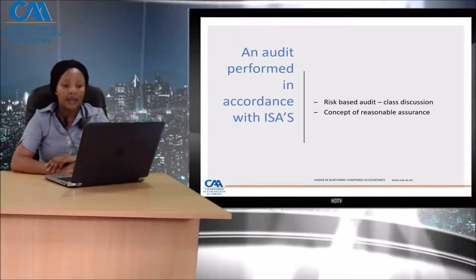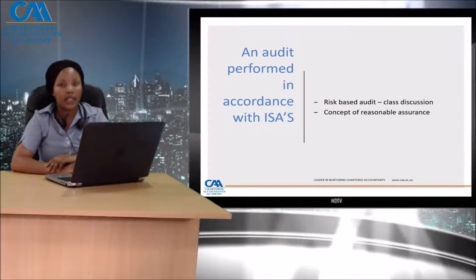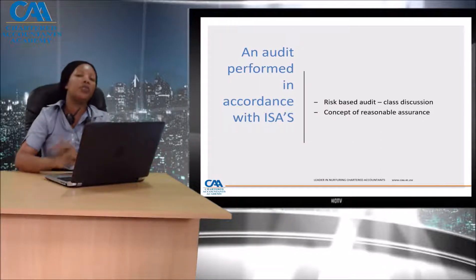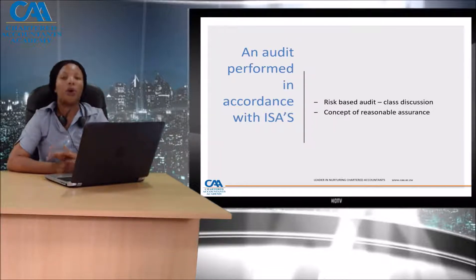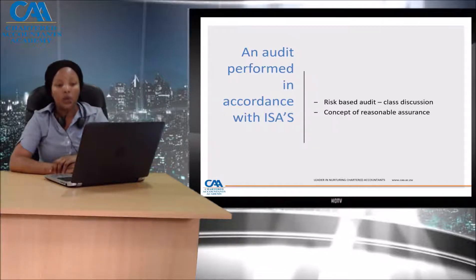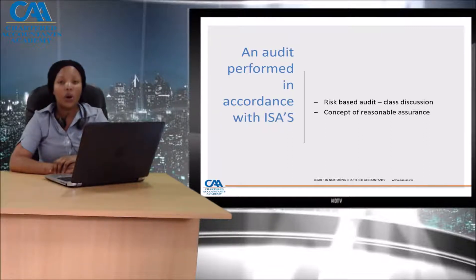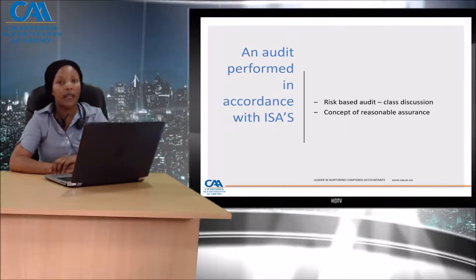We will also be discussing the concept of reasonable assurance. The auditor can only obtain reasonable assurance — they cannot obtain absolute assurance. Because the auditor uses sampling in their audit, whatever they gather in terms of audit evidence can only permit them to give reasonable assurance, and that is the highest level of assurance that the auditor can actually express.